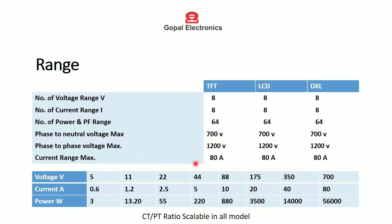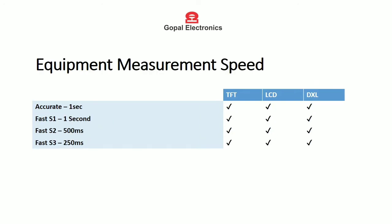Maximum current is 80 amperes. These are the 8 ranges of voltage and 8 ranges of current, and this shows the full-scale power range. Equipment measurement speed is the same in all models.